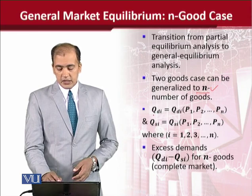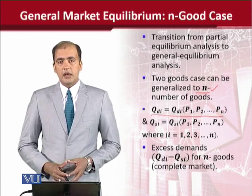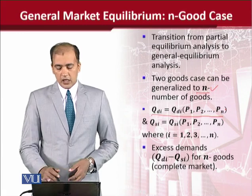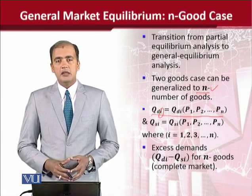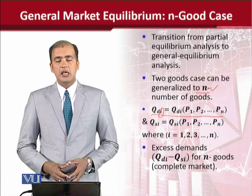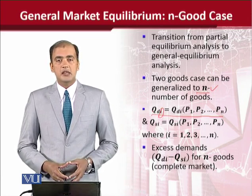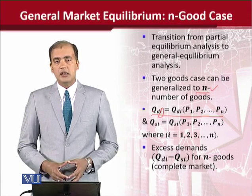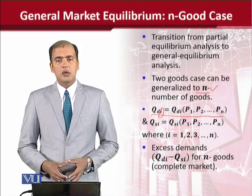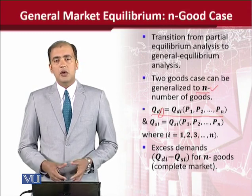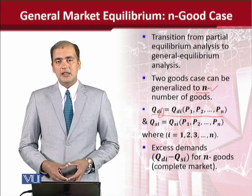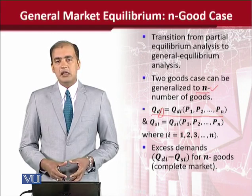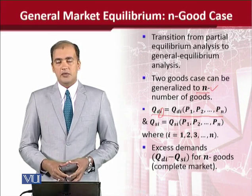What happens is that the demand function can be mentioned in a general way — you can see QDi. This gives us the liberty to put various values for various cases. For example, if we put two values then we will have two goods, and if we put four then we will have four goods. In real life we don't just talk about two or four goods, so we can put any value in place of i and make a demand function for a general market.